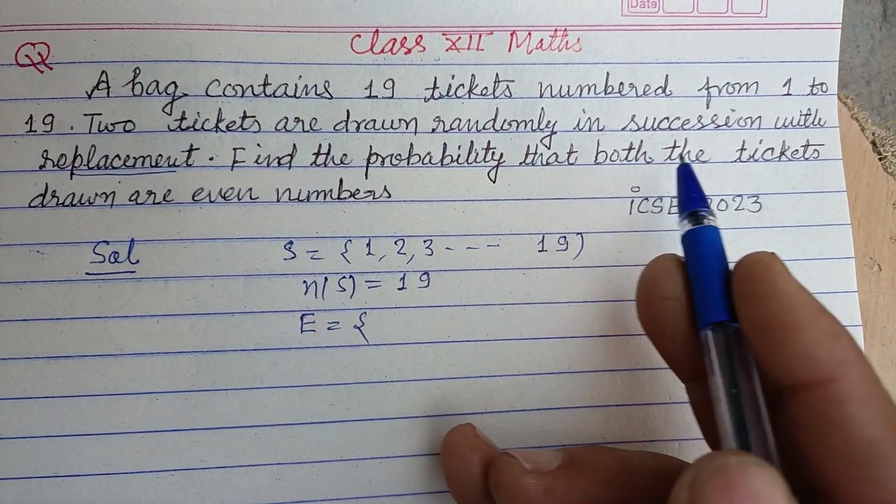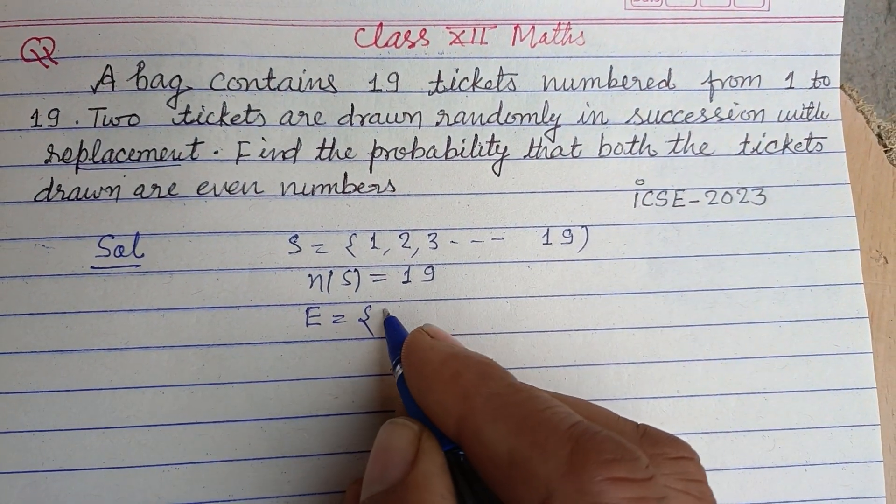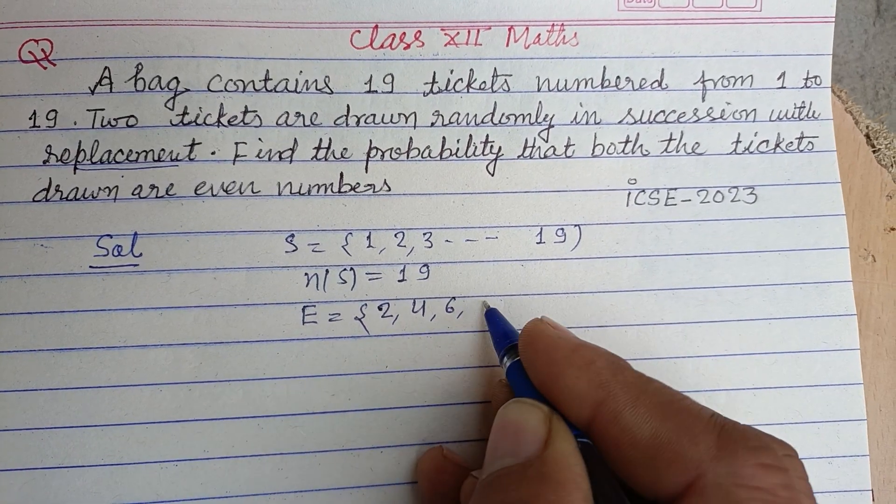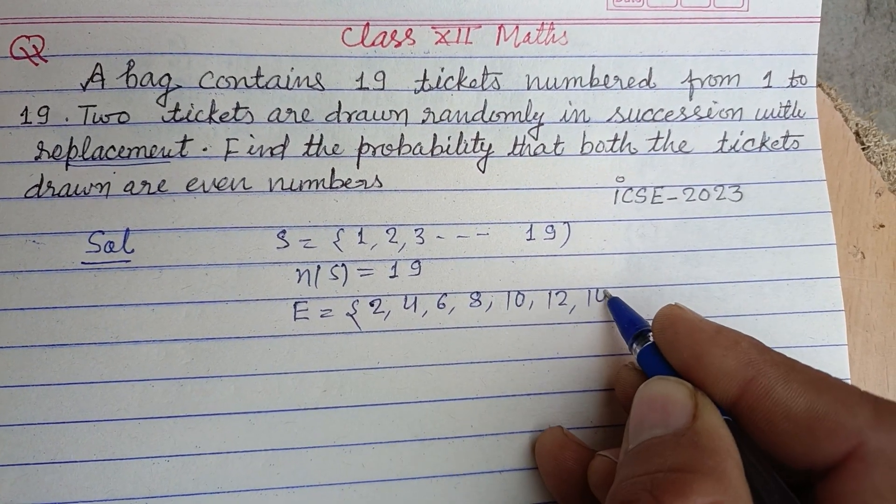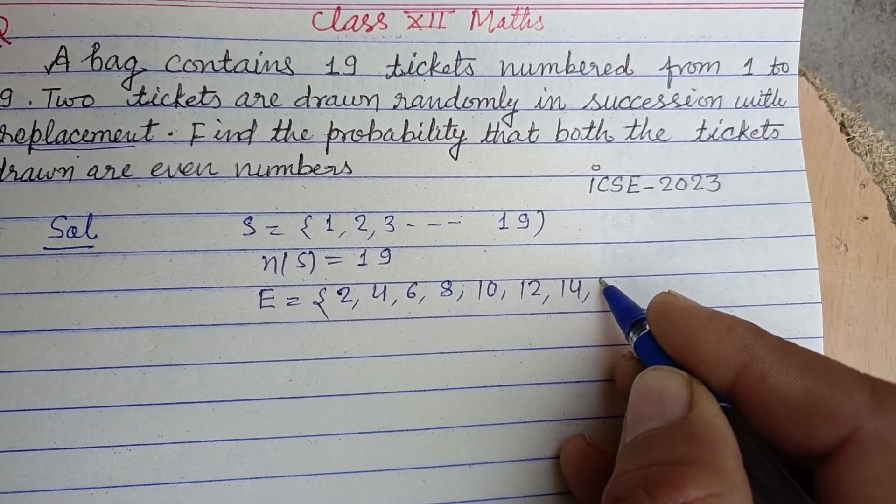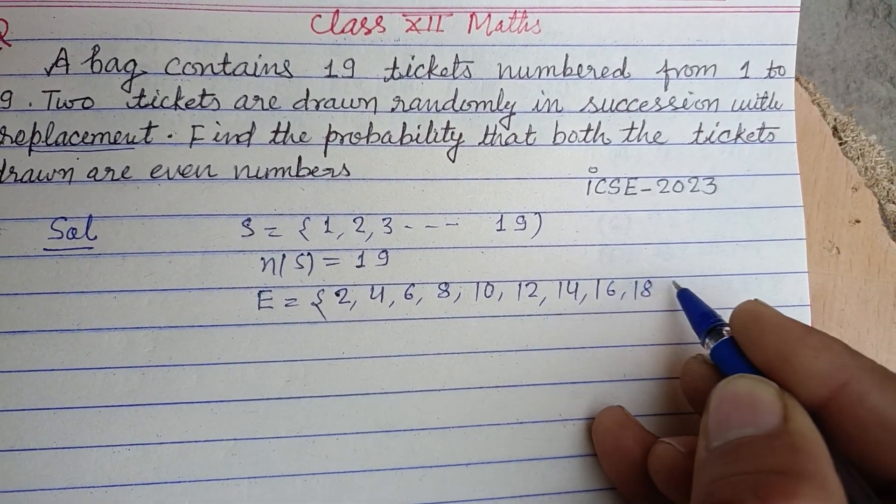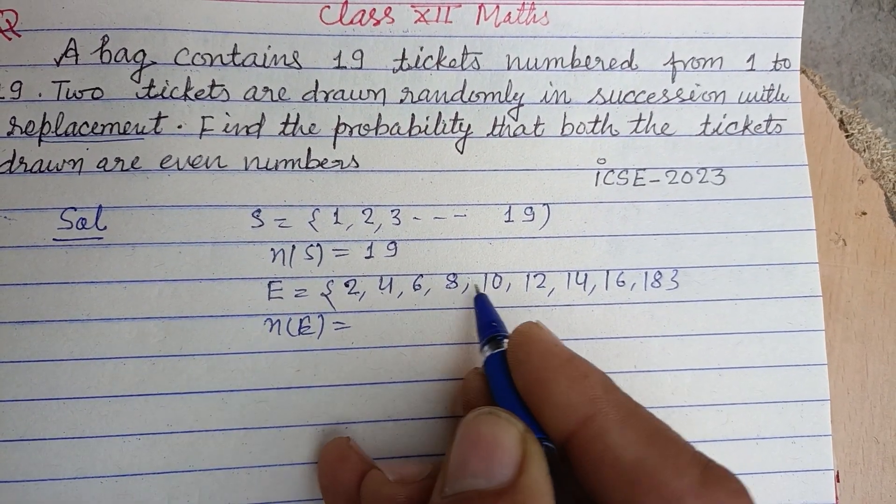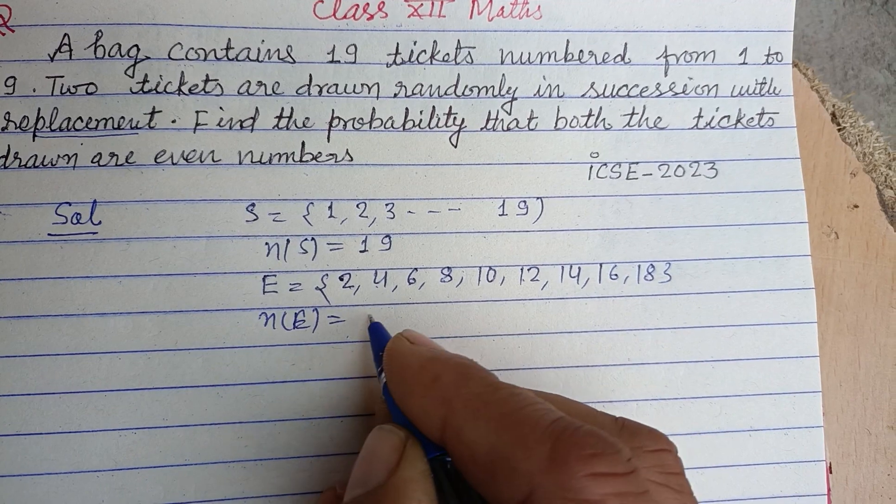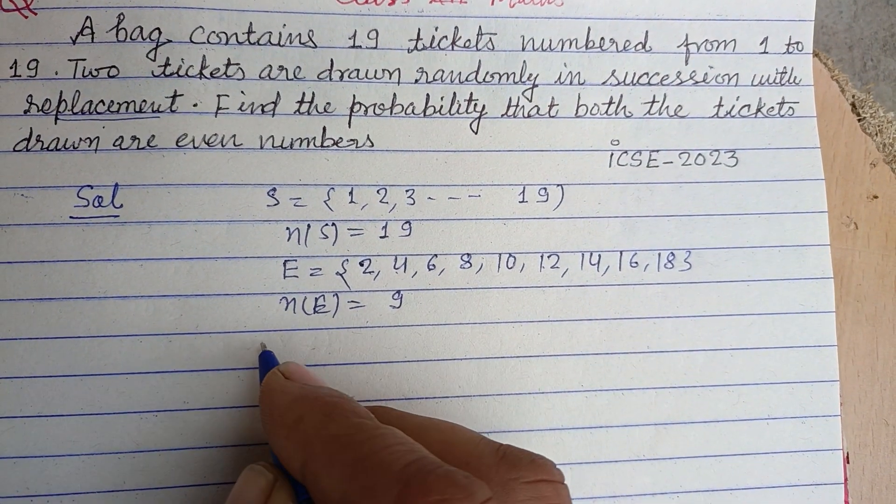Even numbers are 2, 4, 6, 8, 10, 12, 14, 16, and 18. So how many are these? 1, 2, 3, 4, 5, 6, 7, 8, 9 - these are 9 even numbers.